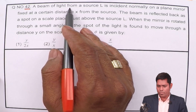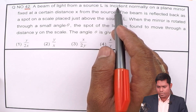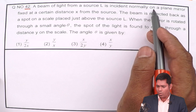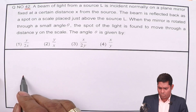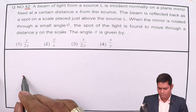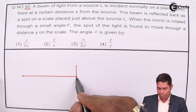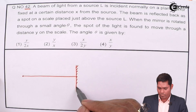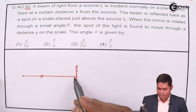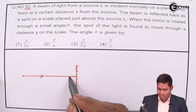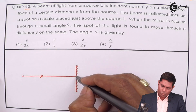A beam of light from a source L is incident normally on a plane mirror. Suppose this is source L and light falls normally on a plane mirror. If it falls normally, it will come like that and go back the same way — it will follow the same path.